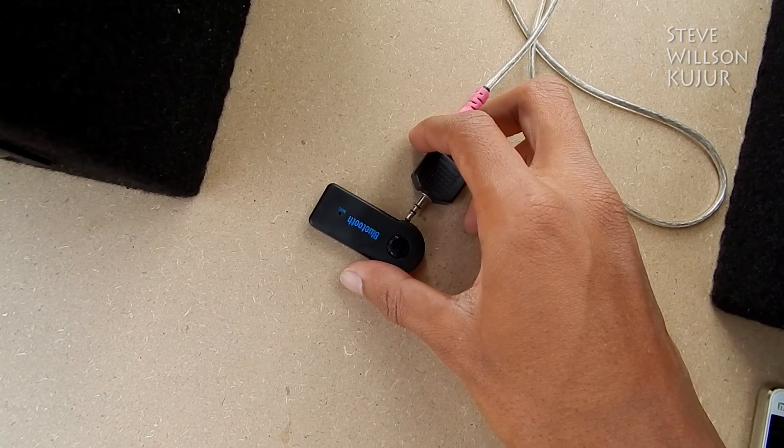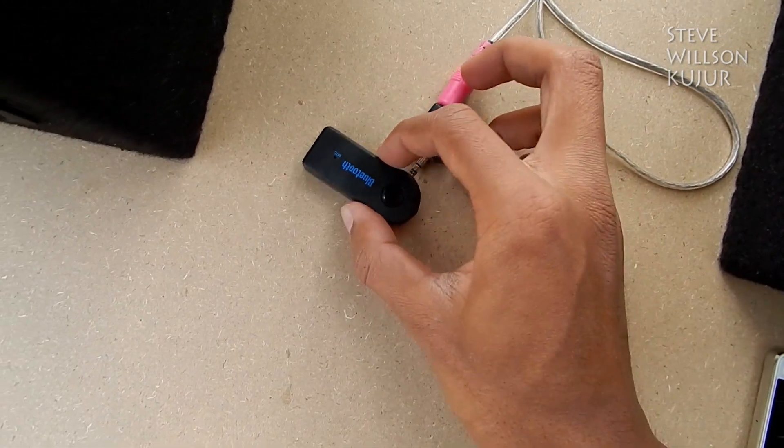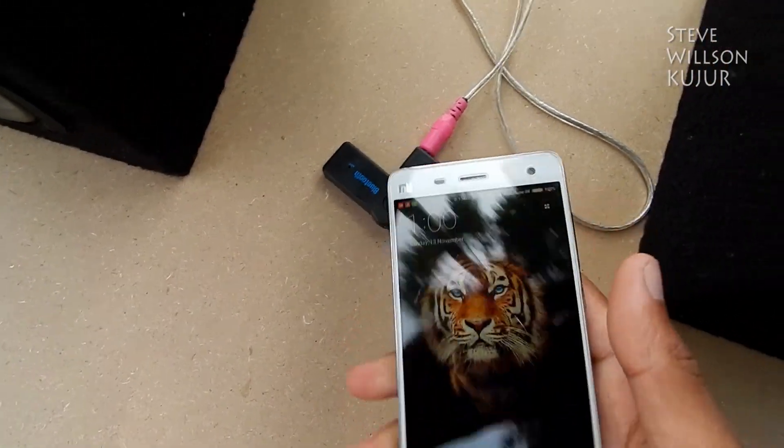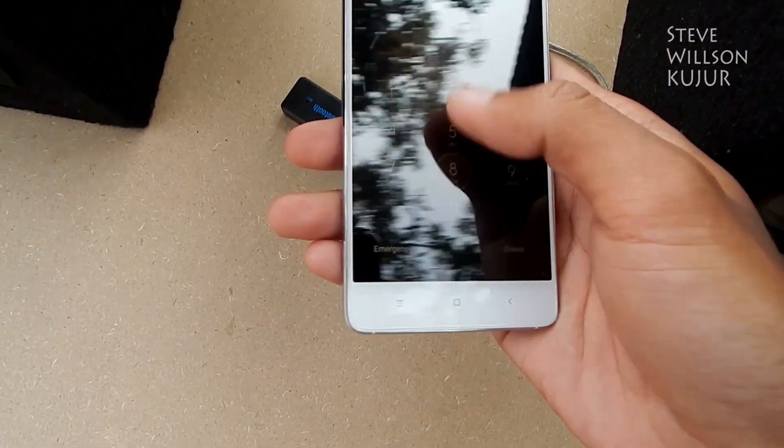Let's quickly connect this up. My phone is connected to this Bluetooth module. Let's quickly play a song.